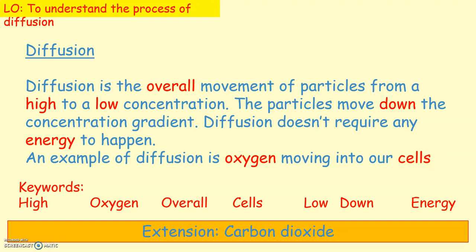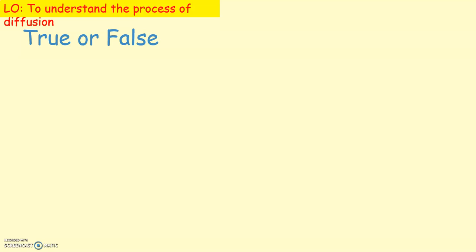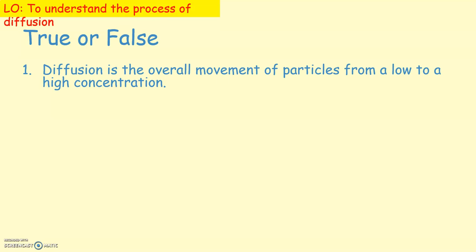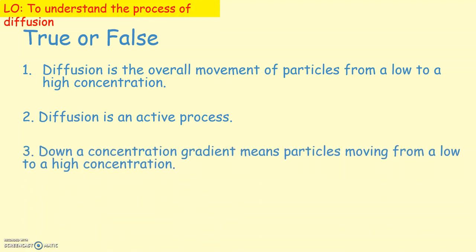True or false questions to test our knowledge. First: diffusion is the overall movement of particles from a low to a high concentration — false, because diffusion is from high to low concentration. Second: diffusion is an active process — false, diffusion is a passive process. Third: down a concentration gradient means particles moving from a low to a high concentration — false, it means from high to low.